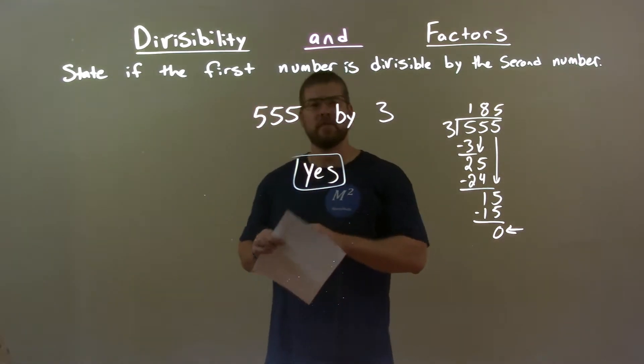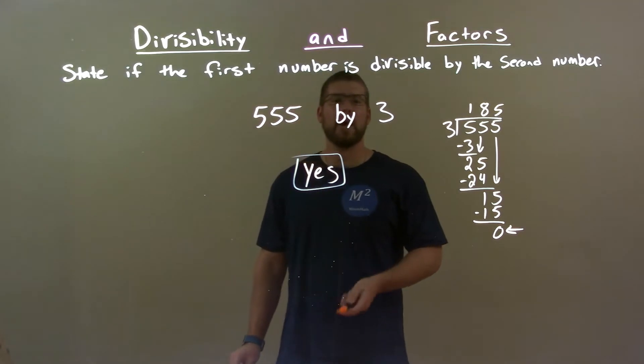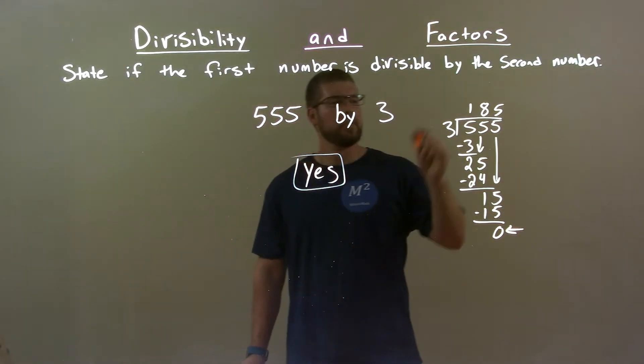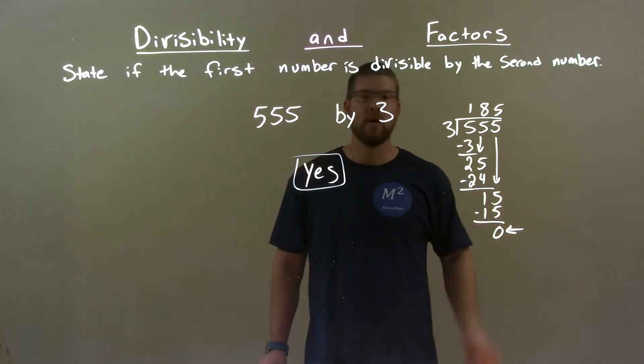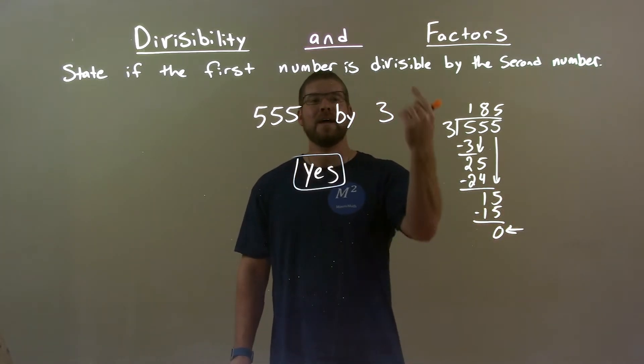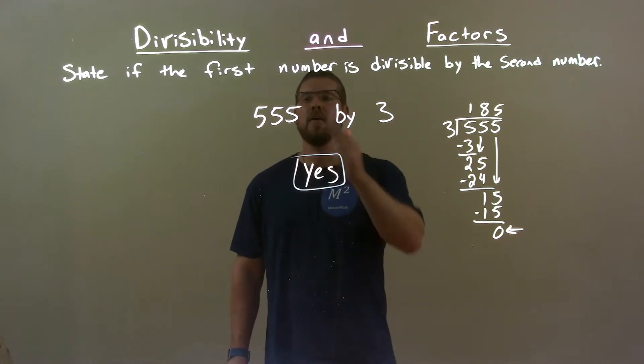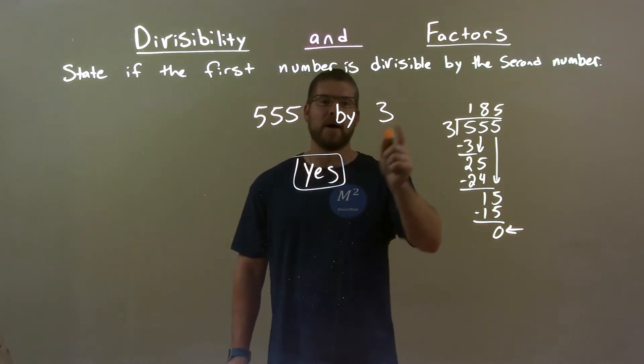Quick recap. We're given 555, and we're going to see if it's divisible by 3. Did long division, 3 into 555, got 185 with a remainder of 0. Remainder of 0 is the key, which tells us that this goes in evenly. So, 555 is divisible by 3.